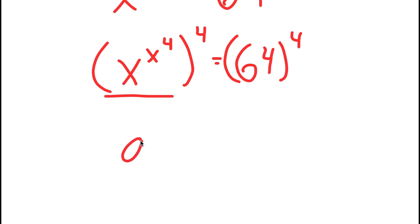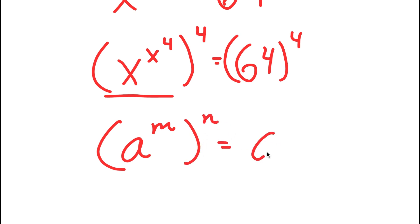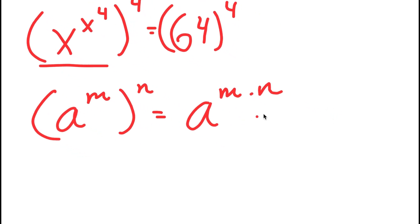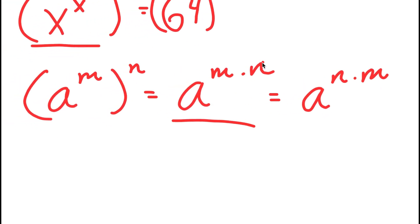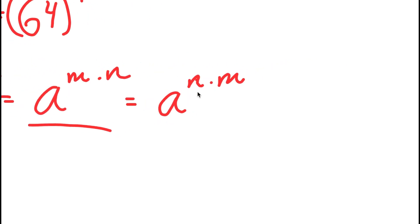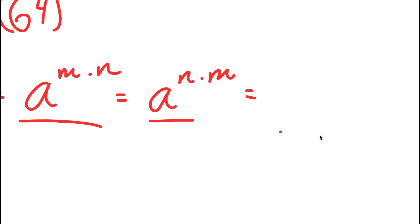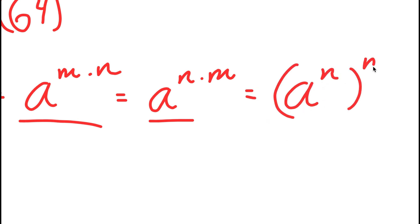If I have something in the form a to the power of m to the power of n, this is equal to a to the power of m times n. However, a to the power of m times n is also equal to a to the power of n times m. And if a to the power of m times n is the same thing as a to the power of m to the power of n, then a to the power of n times m should equal a to the power of n to the power of m.